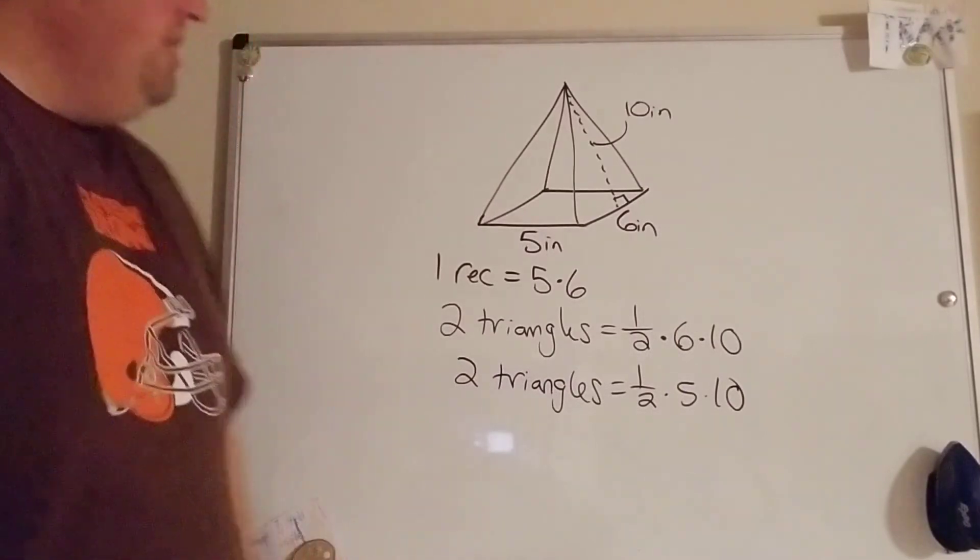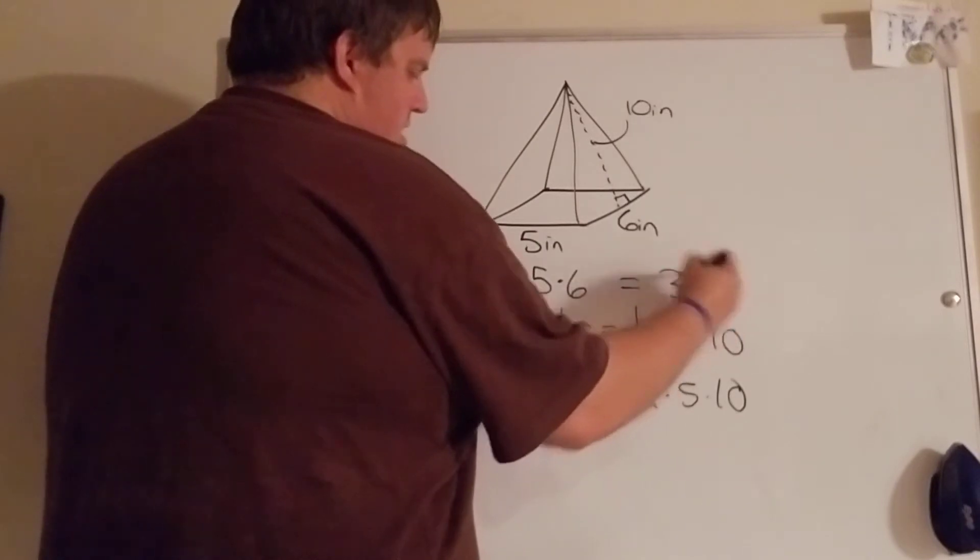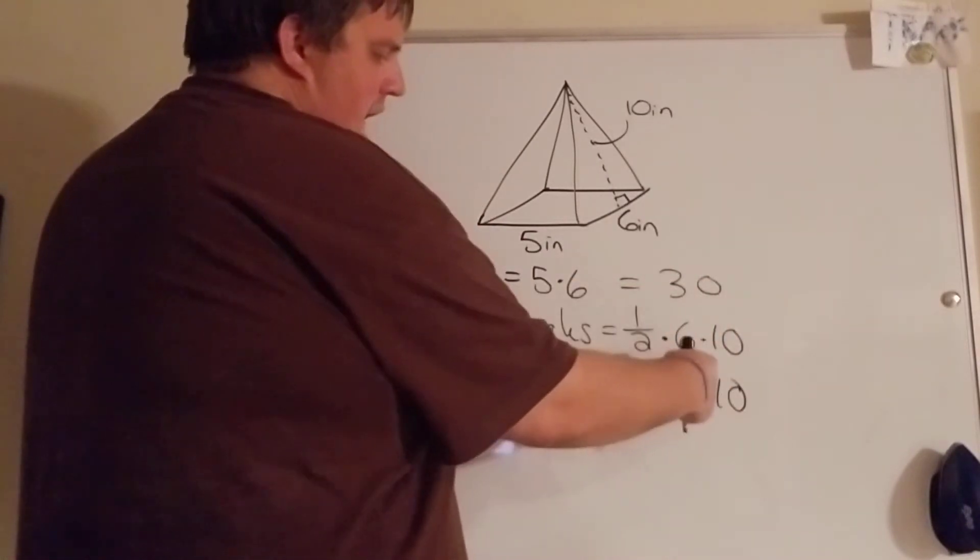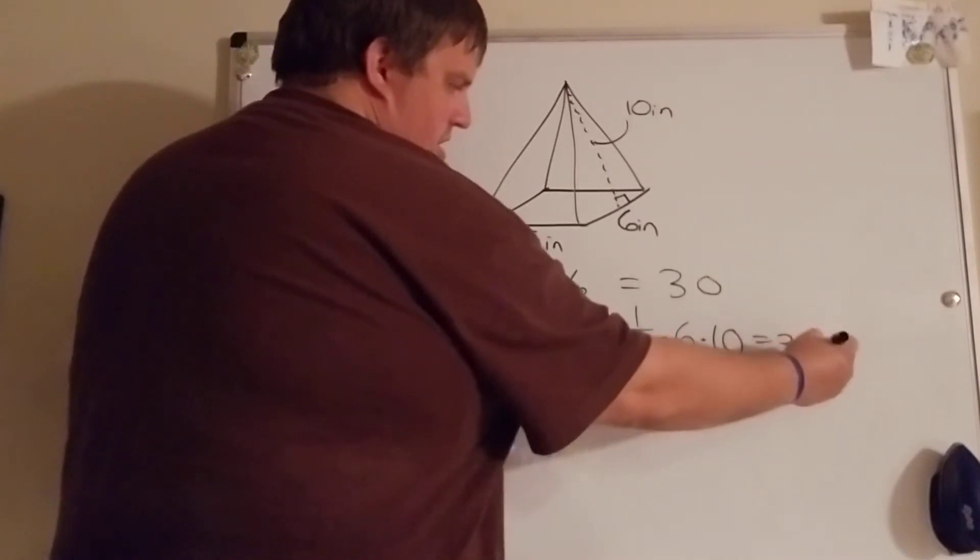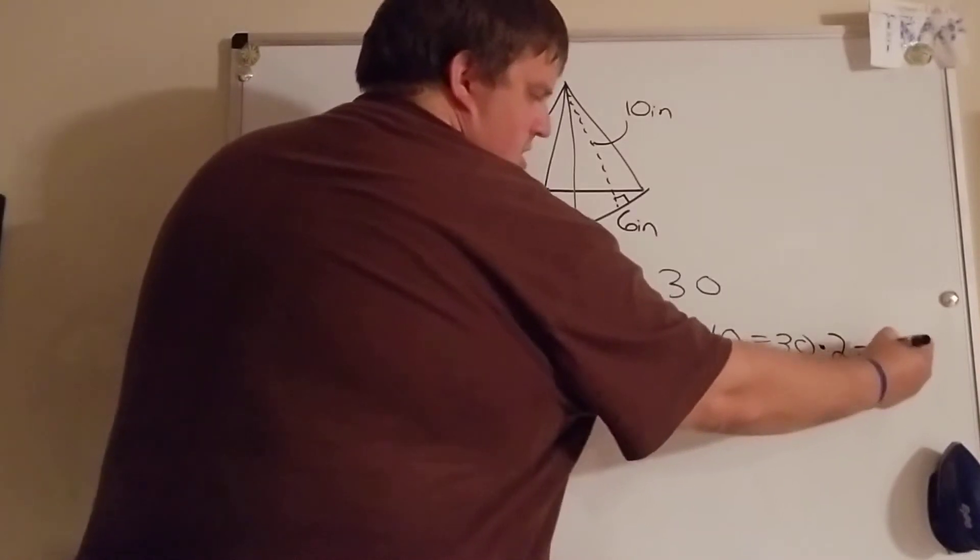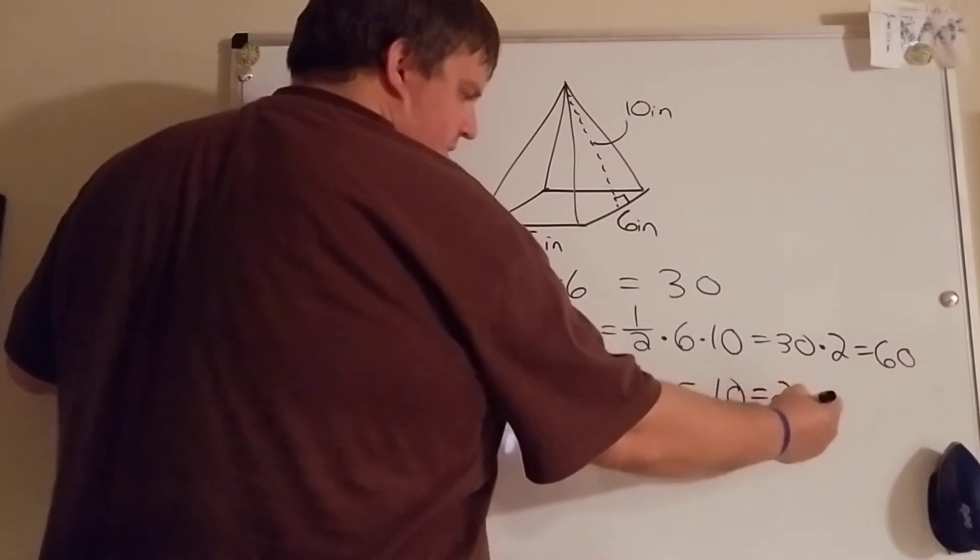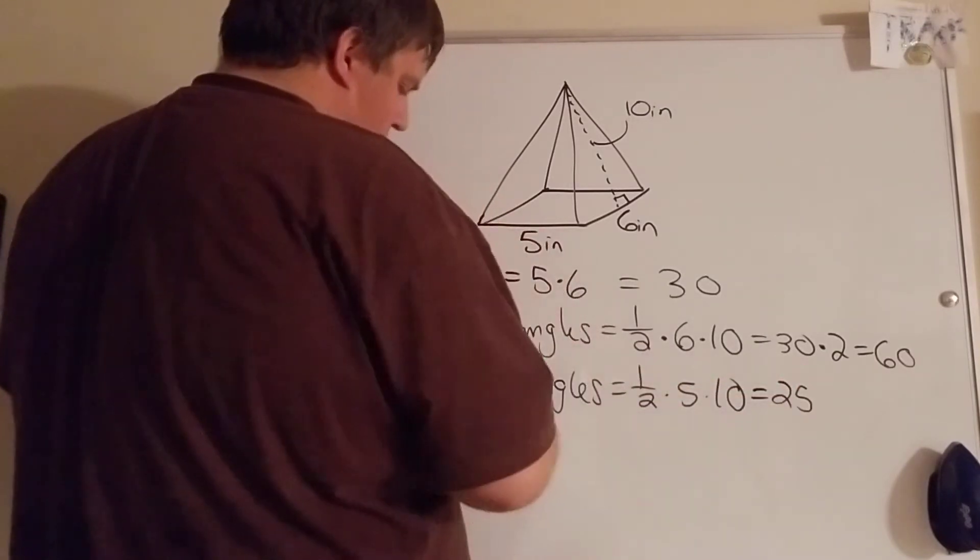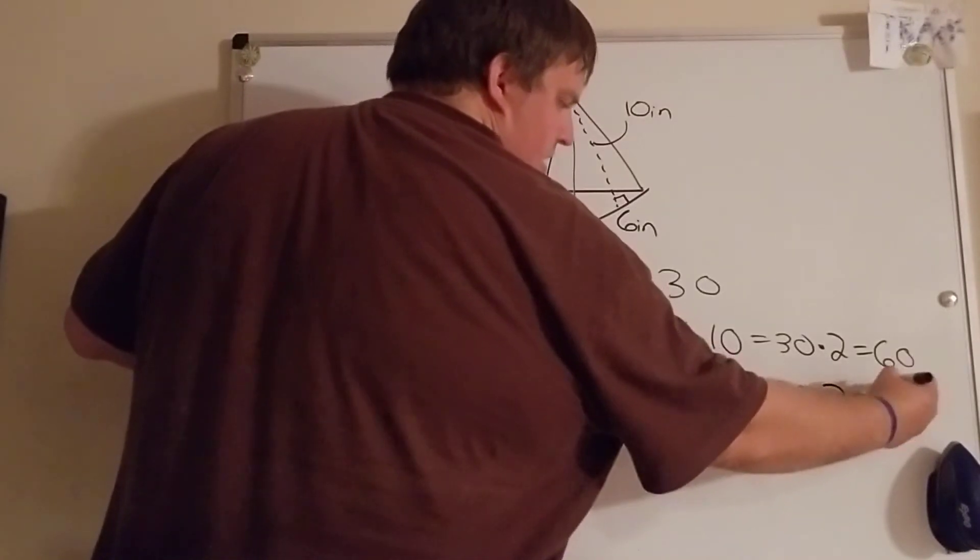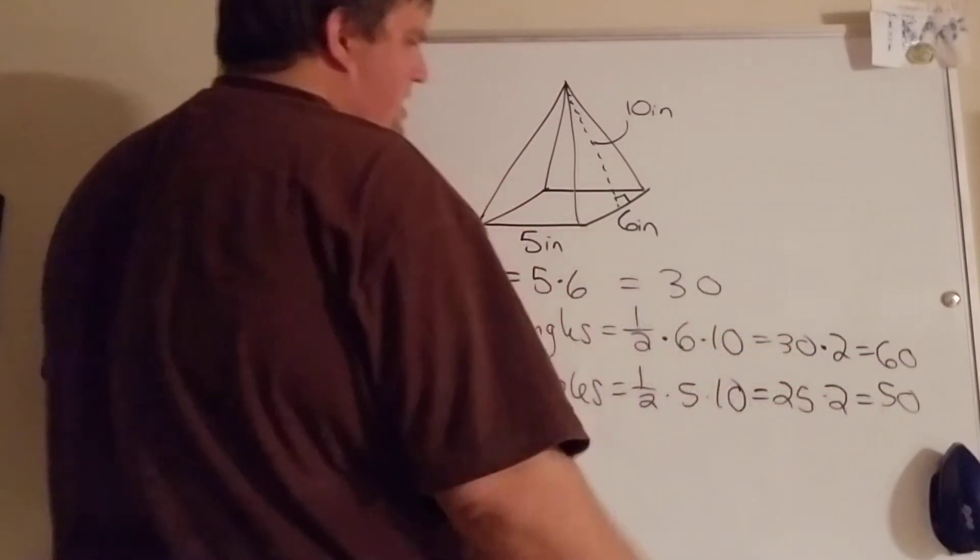Yeah that's pretty much it. And then obviously we're gonna do what we've already done. Five times six is 30, there's only one of those. Half of six is three times ten is also 30, but there are two of those so that's gonna be 60. And then half that's gonna be 25 and there's two of those.